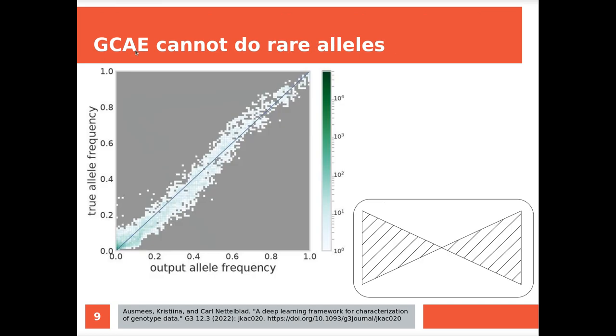One thing it cannot do is rare alleles. So GCAE can extract the gist or the essence of these genotypes, but if there are genotypes that have a rare allele that only exists for example once, it will not reconstruct it. And you can see that, especially at the bottom left of the graph. Like if we have an allele that's in the dataset let's say half of the times, then most of the time it will output it a bit more often than you would hope for.